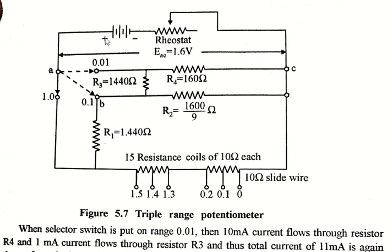For keeping EAC unchanged, the current drawn by these parallel circuits must be 1mA and 9mA. In this condition, current flowing through the measuring circuit of potentiometer is 1mA and the potential range is reduced to one-tenth.